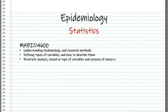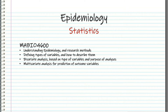Then we continue with bivariate analysis based on type of variables, purpose of analysis, and different tests — whether it is necessary to be parametric or non-parametric. And finally, something new: you are going to learn about multivariate analysis, which is mostly used for prediction of outcome variables or adjusting variables. Both of them are possible, and this is the regression analysis that we are talking about.